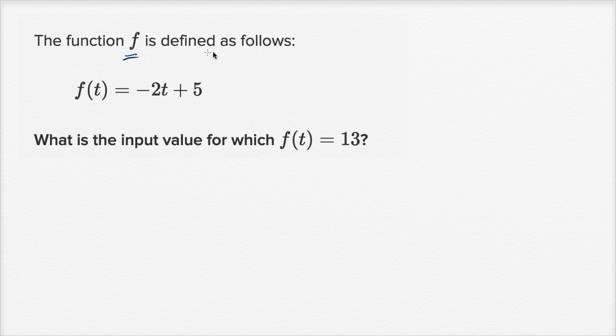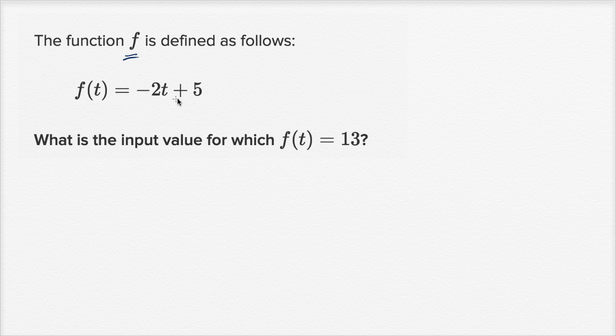The function f is defined as follows: f of t is equal to negative two t plus five. So whatever we input into this function, we multiply it times negative two, and then we add five.